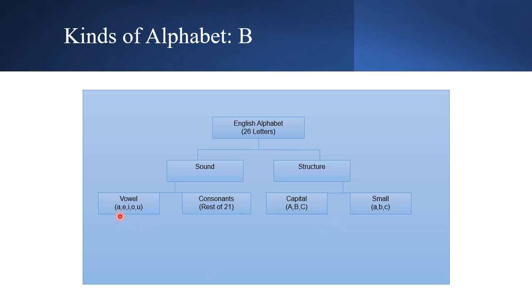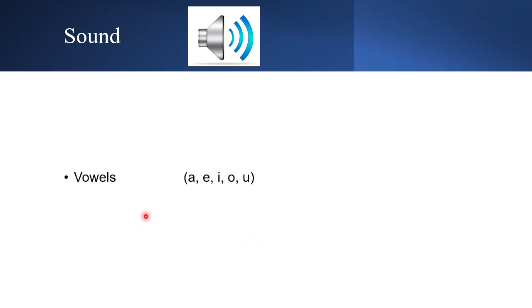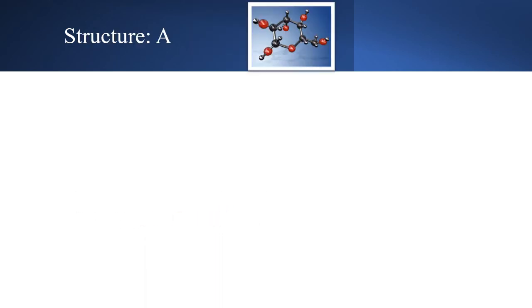Based on sound, we can divide them into two categories. We have these five vowel sounds — A, E, I, O, U — and we have 21 consonants.